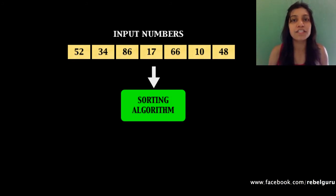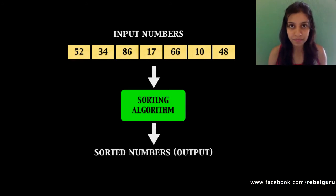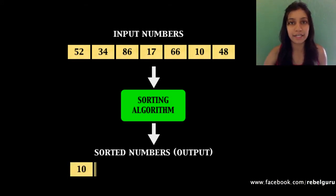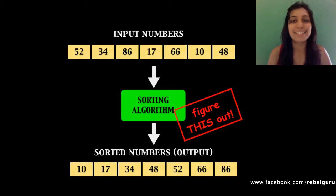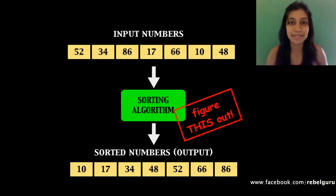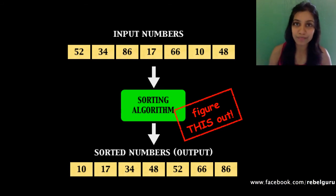Irrespective of the sorting algorithm, the output is a sorted array. A sorting algorithm can sort in ascending or descending order — in this case it's ascending order. What you need to figure out is how to implement the sorting algorithm, because most of us know how to accept numbers from the user, store them in an array, and print a sorted array. What we find difficult is the implementation of the sorting algorithm itself.